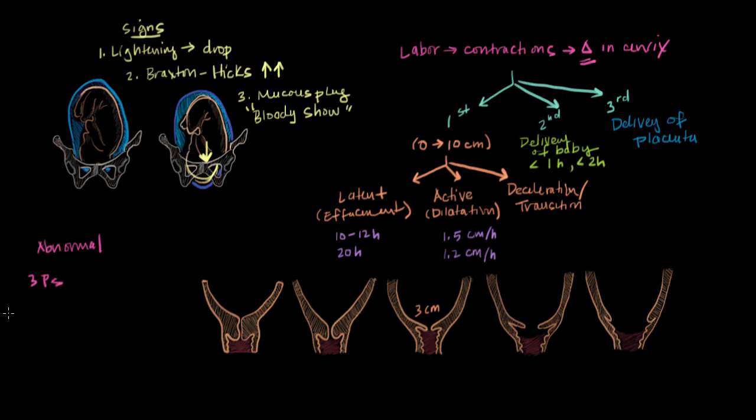The first P is powers, the second P is passenger, and the last P is passage. So the three P's, powers, passenger, and passage, is what we evaluate if labor isn't going the way that it should, if it's abnormal.